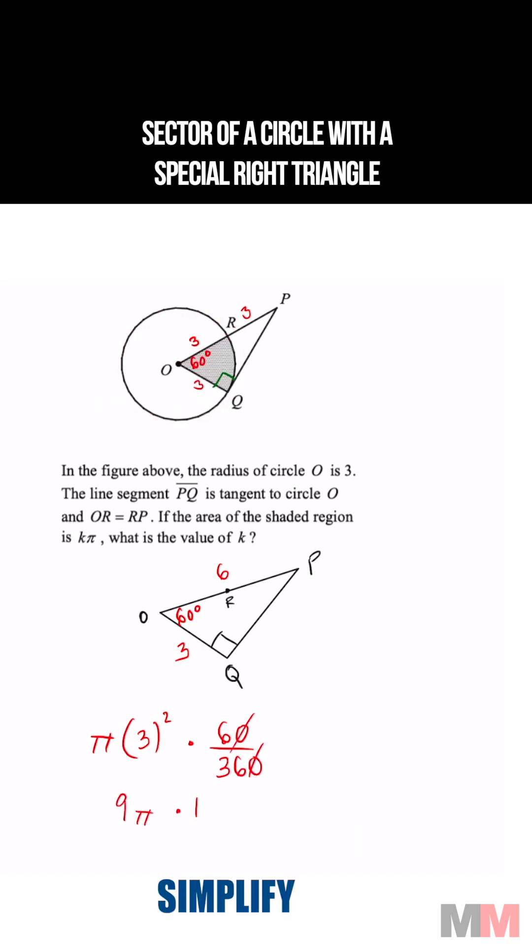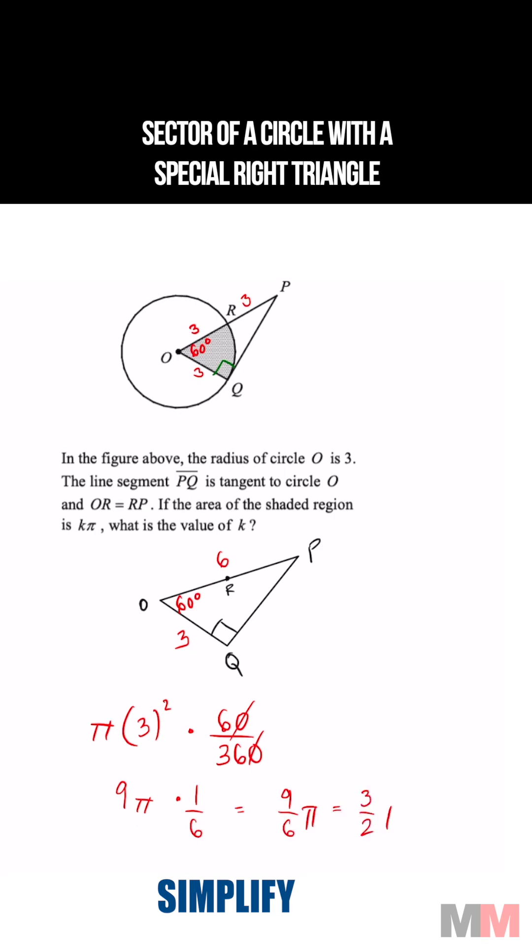9 pi times 1 sixth, which then simplifies to 3 over 2 pi. There is your value for K. Peace.